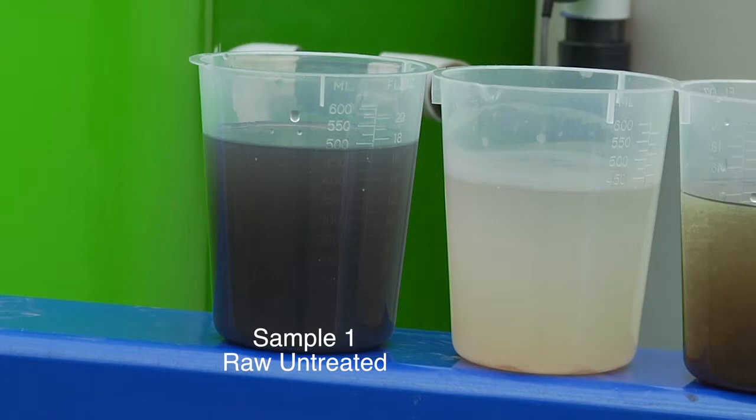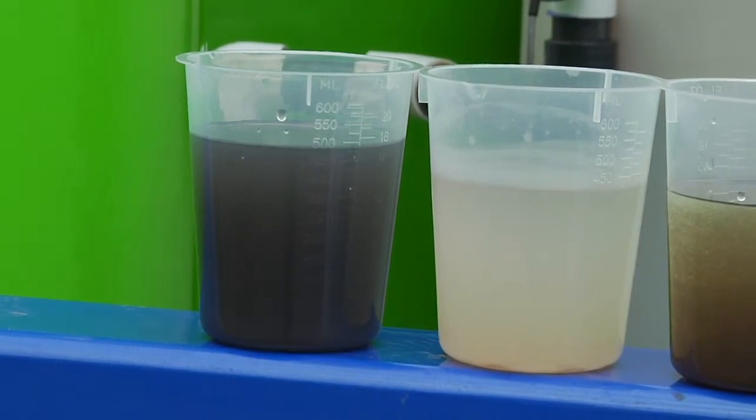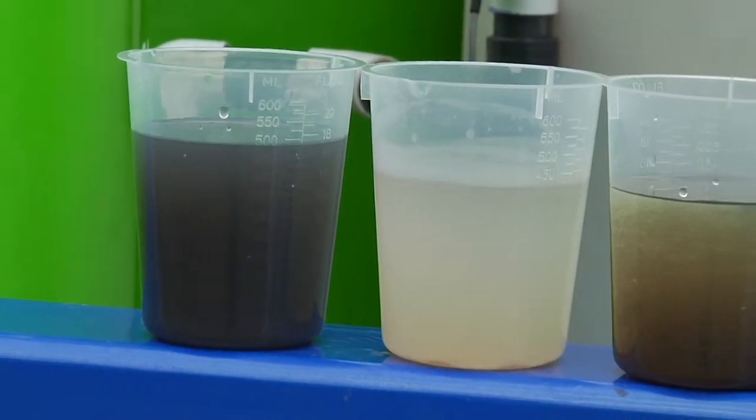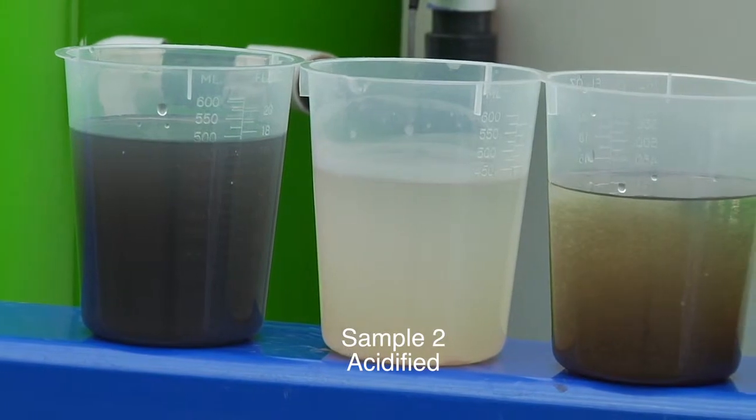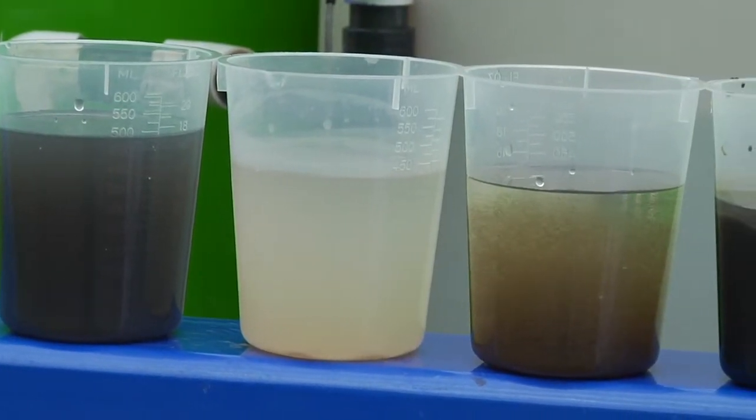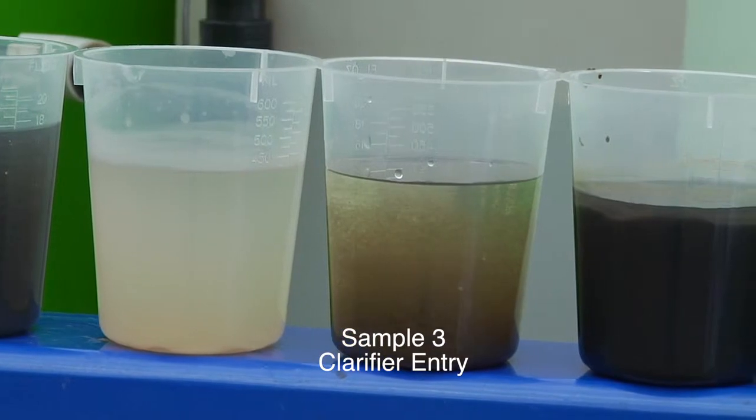This first sample is the raw untreated water coming into the system. The second sample is the acidified water from the receiving tank. Number three is the sample as it enters the clarifier.